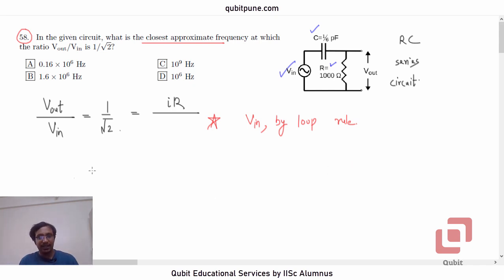This is actually I times Z. What is Z? Z is the impedance of the circuit. Z is the impedance of the circuit. The moment you reach this particular step, the rest of the problem is very easy.